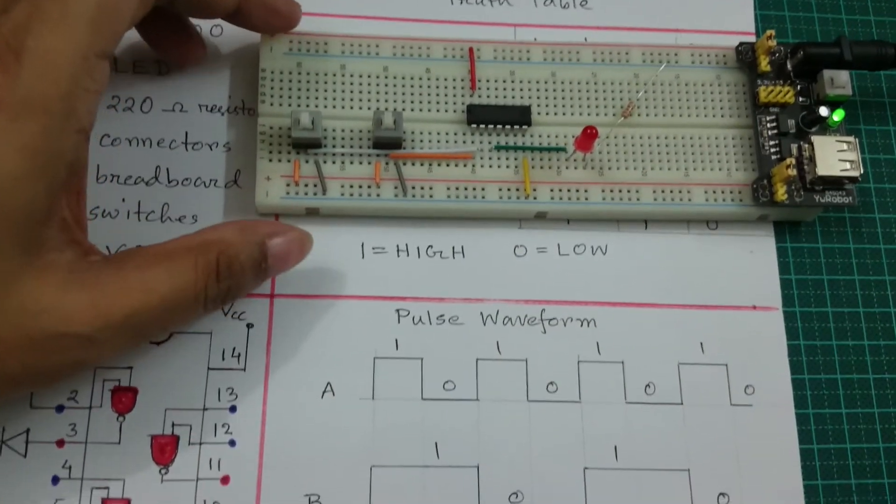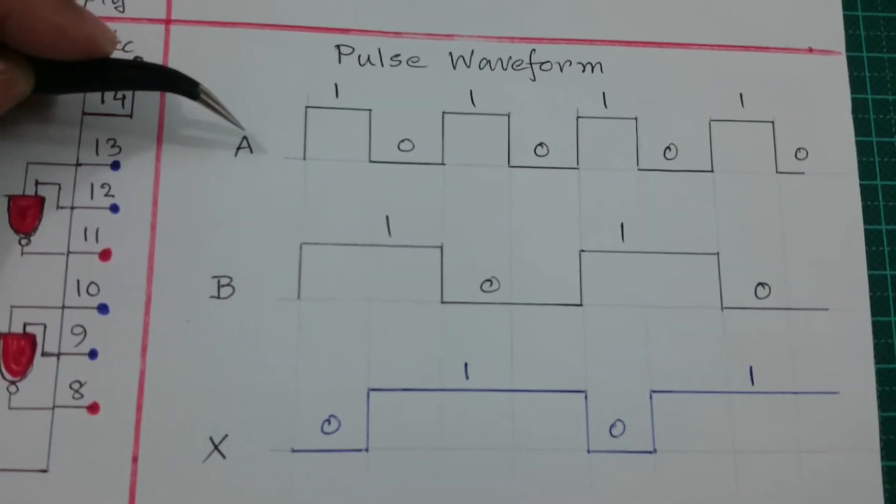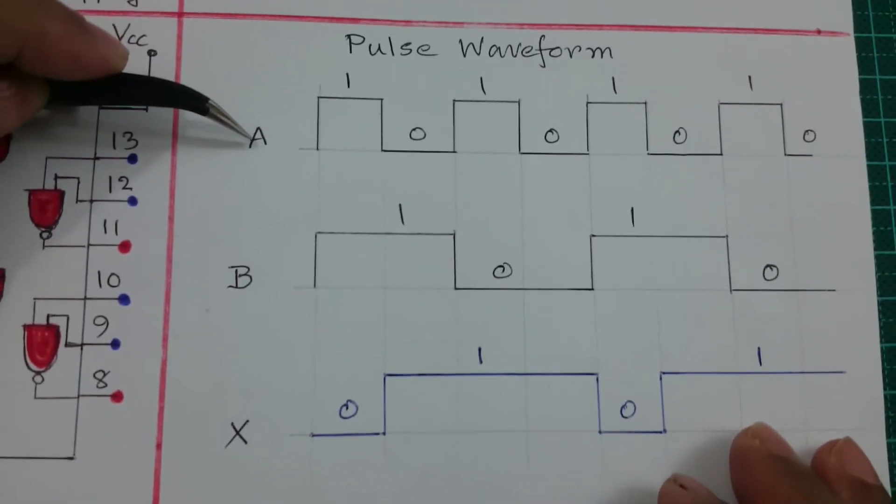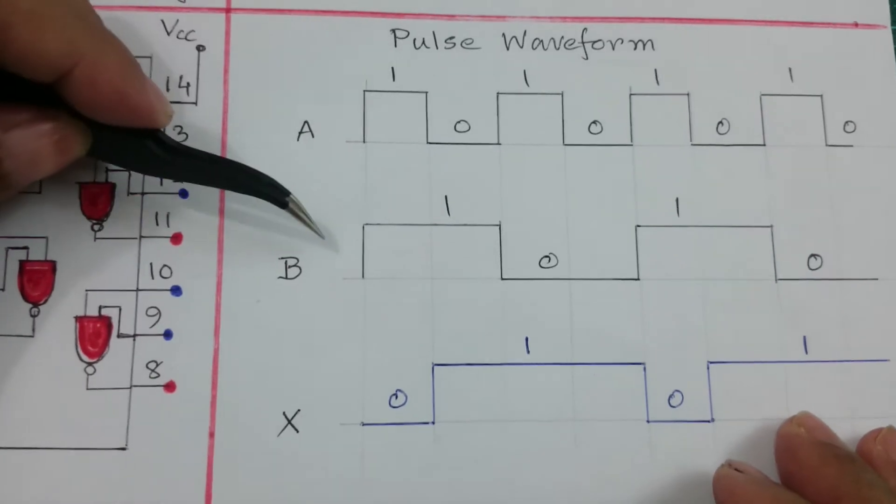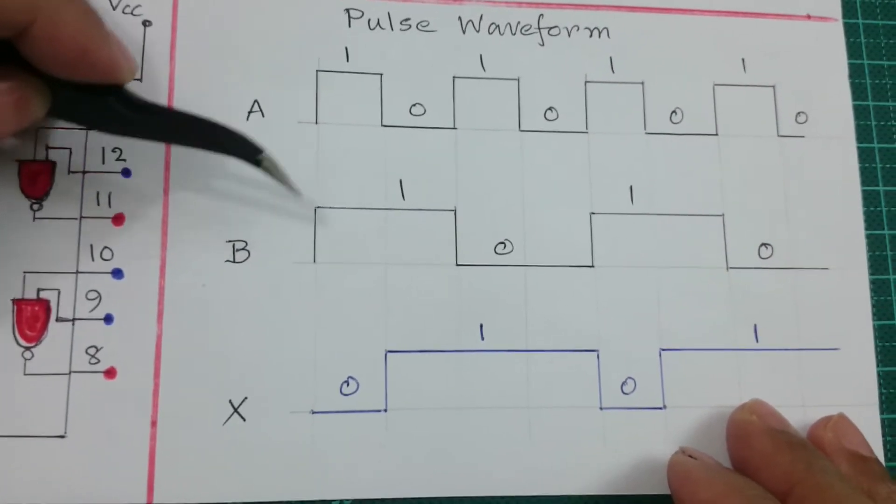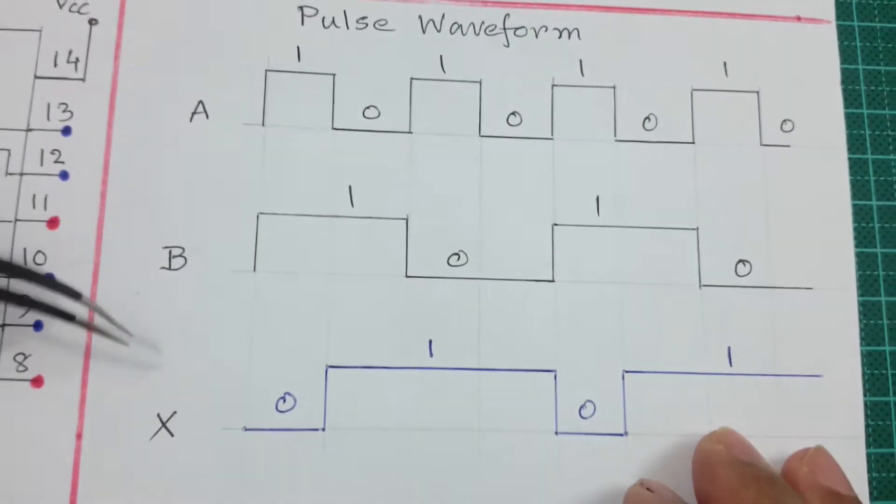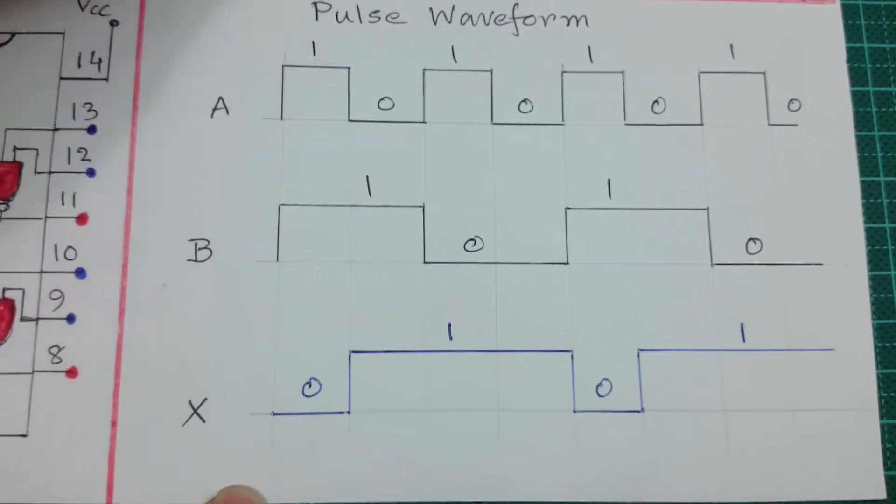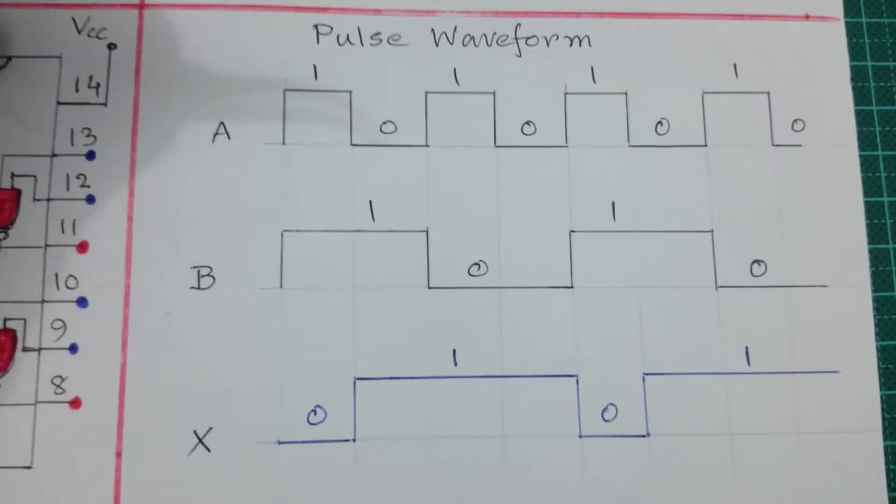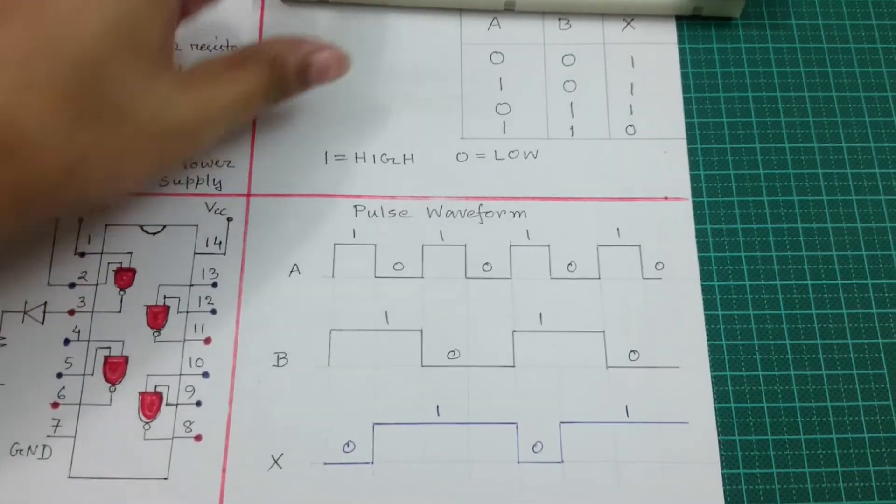Now looking at the pulse waveform, if input A has pattern 1-0-1-0 and input B has pattern 1-1-0-0-1-1-0-0, the output follows the truth table.